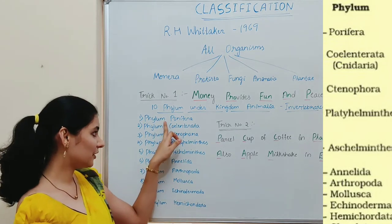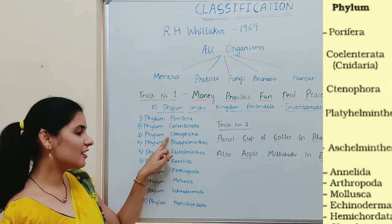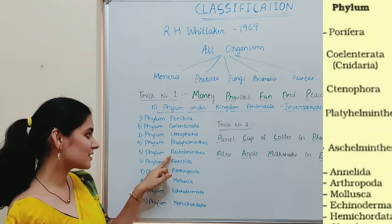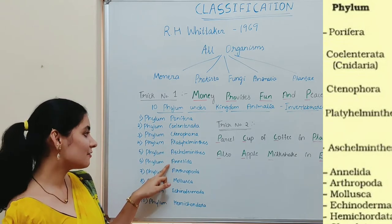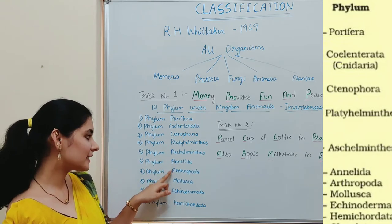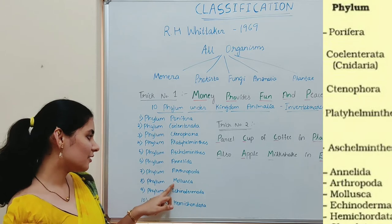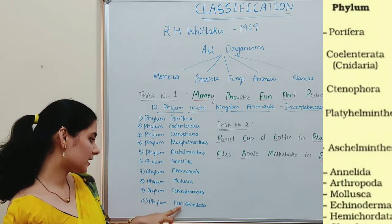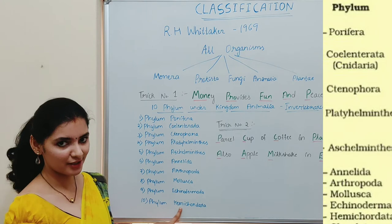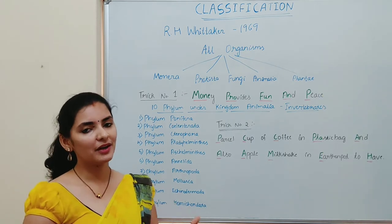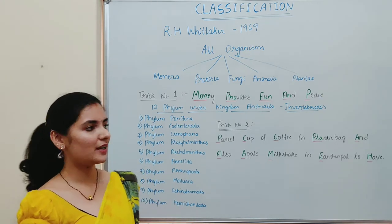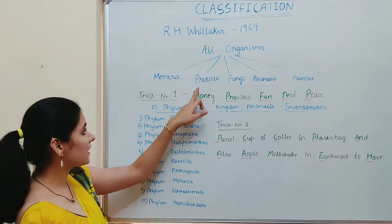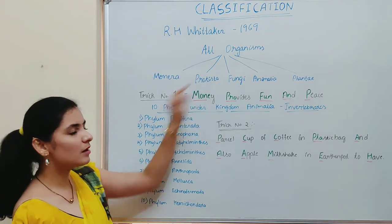The 10 phyla are: phylum Porifera, phylum Cnidaria, phylum Ctenophora, phylum Platyhelminthes, phylum Aschelminthes, phylum Annelida, phylum Arthropoda, phylum Mollusca, phylum Echinodermata, and phylum Hemichordata. In some textbooks, phylum Protozoa is also included under invertebrate, but actually it comes under the kingdom Protista.